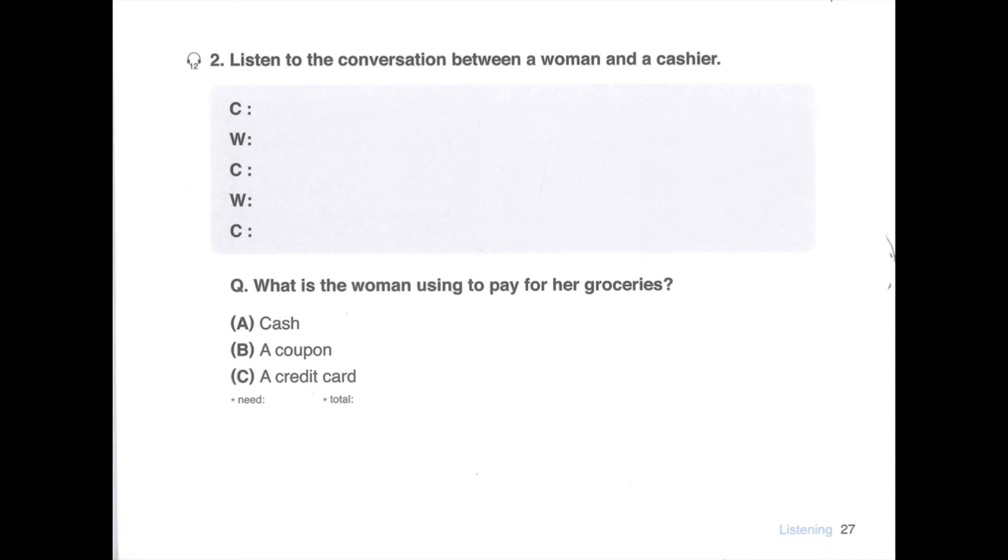Number 2, listen to the conversation between a woman and a cashier. Do you need a plastic bag? No, thank you. I brought my own bag. The total comes to $20. Here's my credit card. Thank you. What is the woman using to pay for her groceries? A: Cash. B: A coupon. C: A credit card.